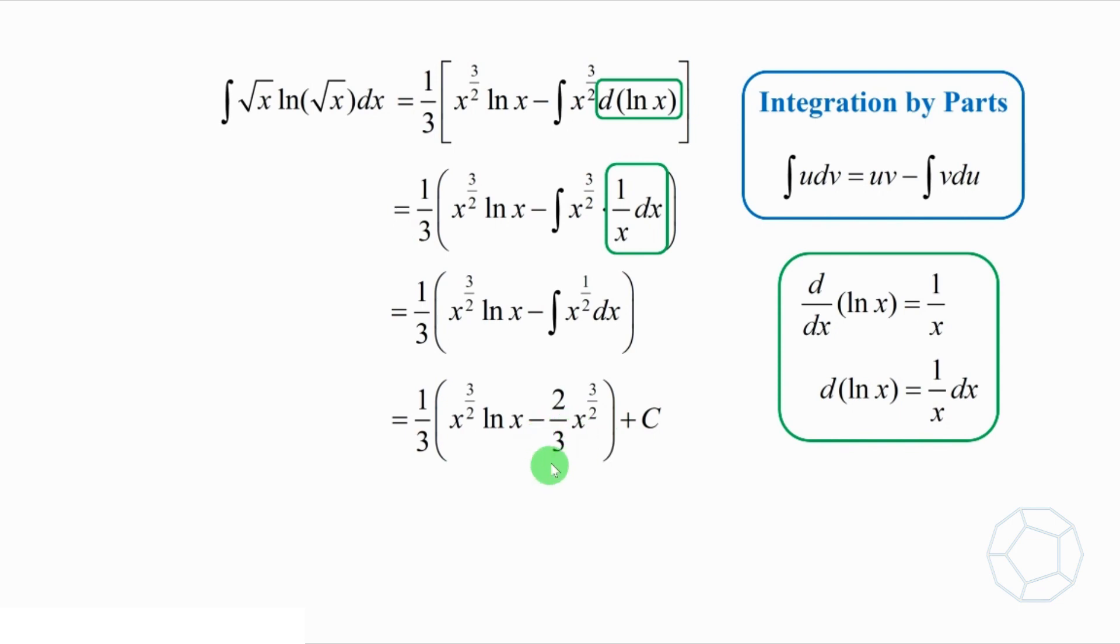We check out the denominator 3 here, and the common factor x to the power of 3 over 2. Then, the answer is equal to x to the power of 3 over 2 over 9 times bracket 3 log x minus 2 plus C.